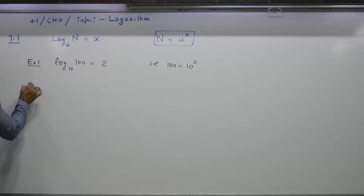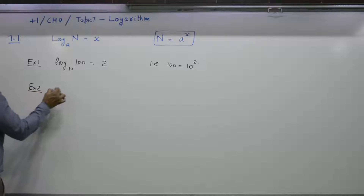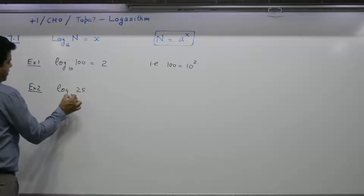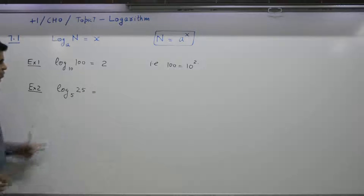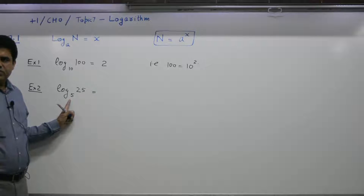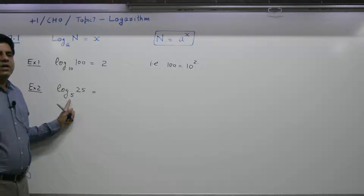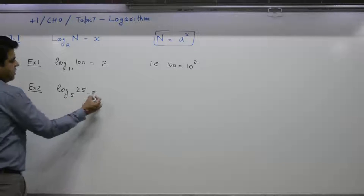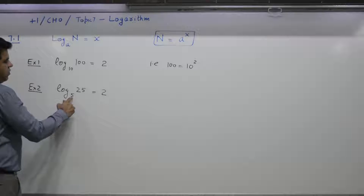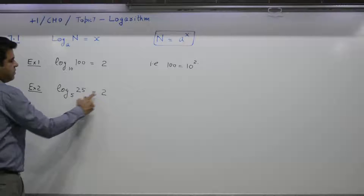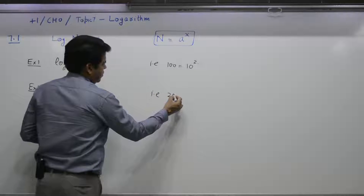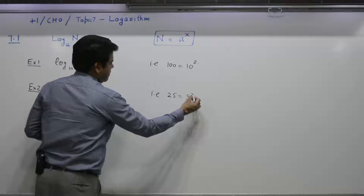Example 2: Log of 25 to the base 5. What power of 5 gives you 25? 5 to the power 1 is 5, 5 to the power 2 is 25. So 25 is equal to 5 to the power 2, meaning log of 25 to the base 5 is equal to 2.